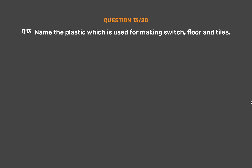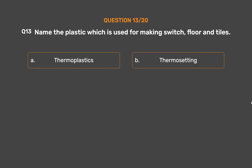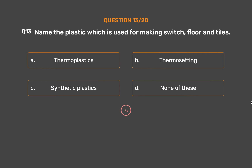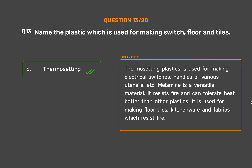Question Number 13. Name the plastic which is used for making switches, floors and tiles. Option A: Thermoplastics. Option B: Thermosetting. Option C: Synthetic plastics. Option D: None of these. The correct answer is Option B: Thermosetting. Thermosetting plastics are used for making electrical switches, handles of various utensils, etc. Melamine is a versatile material — it resists fire and can tolerate heat better than other plastics. It is used for making floor tiles, kitchenware and fabrics which resist fire.